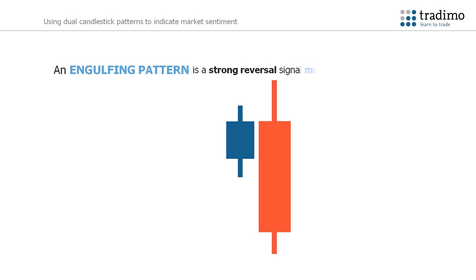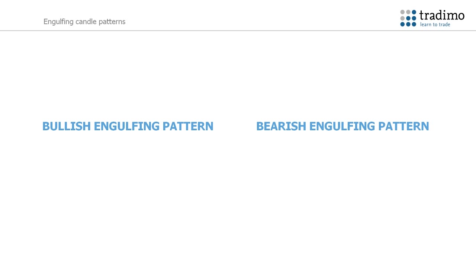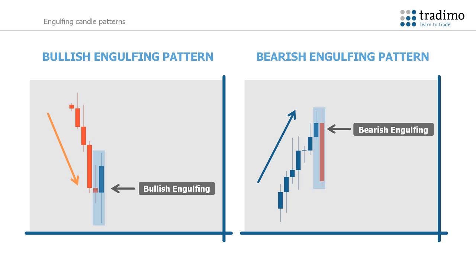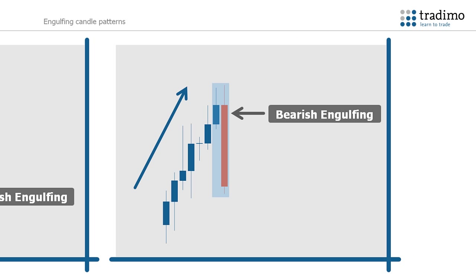An engulfing pattern is a strong reversal signal made up of two candlesticks. There are two types of engulfing patterns: a bearish engulfing pattern and a bullish engulfing pattern. There are three main characteristics for spotting these patterns. The market must not be ranging — there has to be an uptrend or downtrend preceding the pattern, even if it is short term. Secondly, the body of the first candle must be smaller than the body of the second candle. It is not necessary for the second body to engulf the actual wick of the first candlestick, although this does create an even stronger signal when it does.